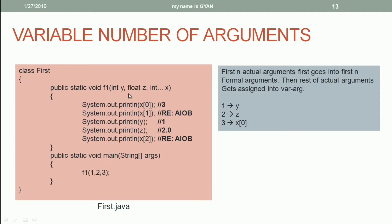Here the method f has three arguments: integer, float, and a variable number of arguments of type integer. When we call f1 with three actual arguments, 1 is copied into integer y, 2 is copied into float z, and 3 is copied into x[0]. The JVM creates an integer array of size 1 containing 3. So x[0] prints 3, and x[1] throws an ArrayIndexOutOfBoundsException. Printing y gives 1, printing z gives 2.0. Again, printing x[2] throws an ArrayIndexOutOfBoundsException because there is only one element in array x at index 0.